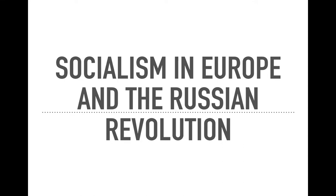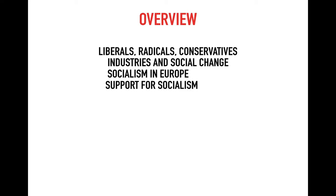So class 9, today we will look into the second chapter of your history syllabus. The name of the chapter is Socialism in Europe and the Russian Revolution. Today we will be looking into liberals, radicals, and conservatives. We'll also be talking about industries and the social change, socialism in Europe as a new idea that emerged, and the support for socialism.